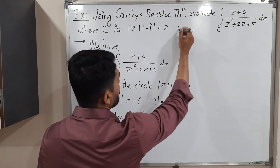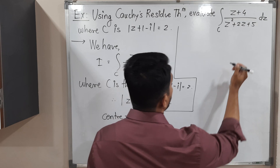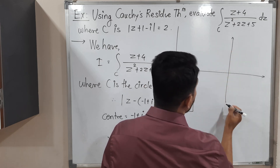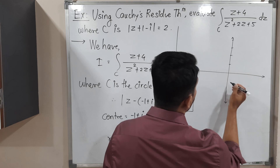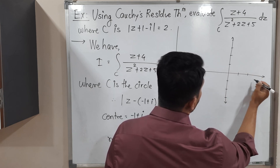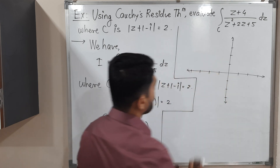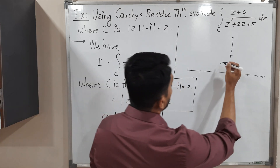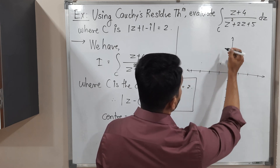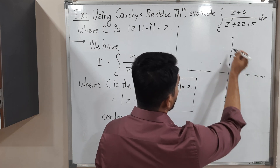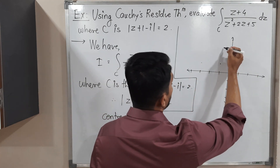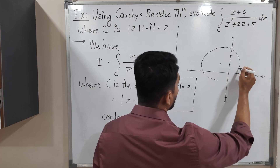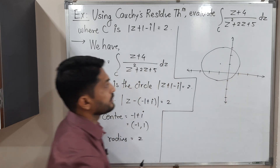Let us draw the circle. This is the imaginary axis and this is the real axis. Taking some scaling: 1, 2, 3, 4 and −1, −2, −3 on the real axis; 1, 2, 3 and −1, −2, −3, −4 on the imaginary axis. Our circle has center (−1, 1). With radius 2, we mark points 2 units in each direction and draw the circle passing through those four points.